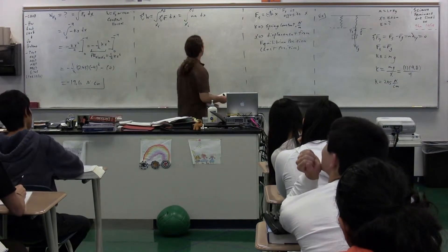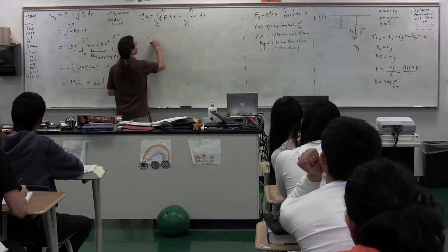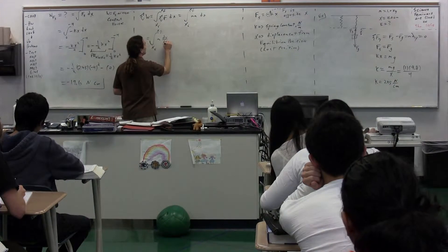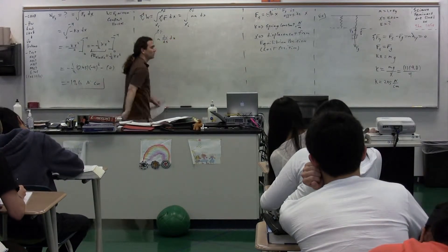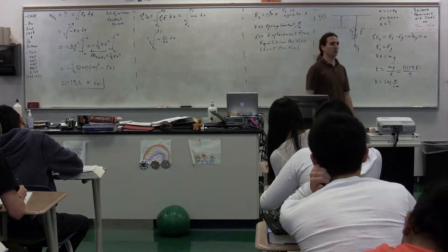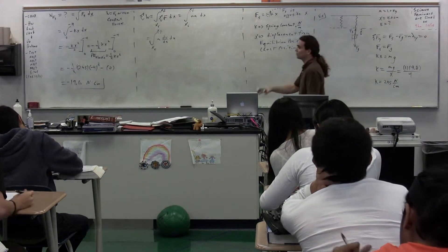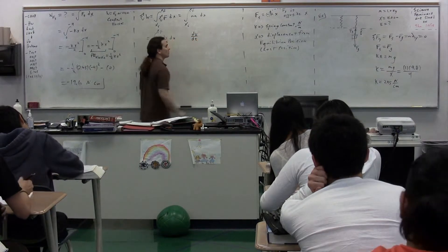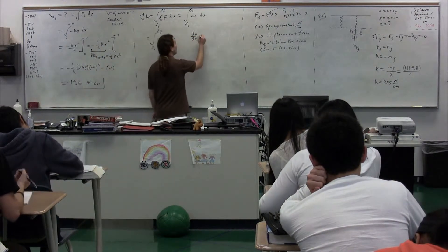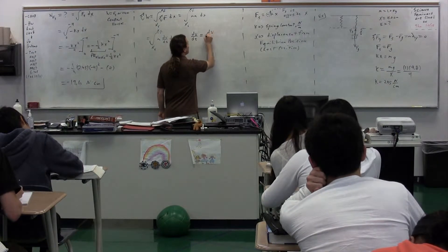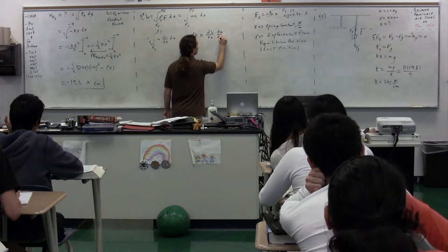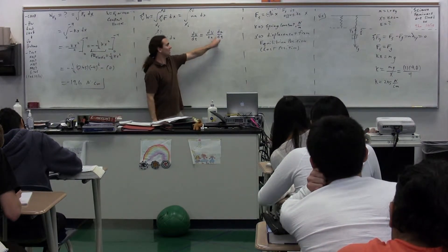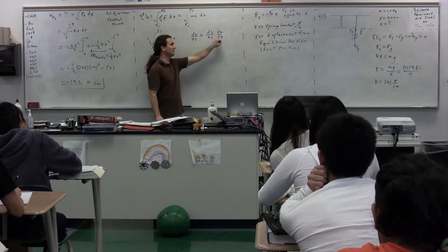So we need to look at the definition of acceleration. We know this is equal to the integral from the initial to the final position of mass times the derivative of velocity with respect to time. We're still not there yet, because we need something with respect to x. It turns out that dv/dt is equal to the derivative of velocity with respect to position times the derivative of position with respect to time — because if you multiply these two together, the dx's cancel out and you get dv/dt.